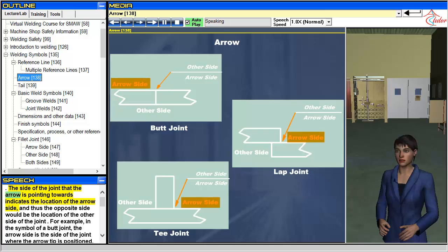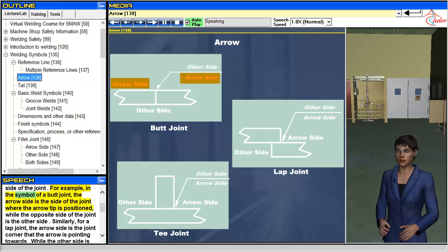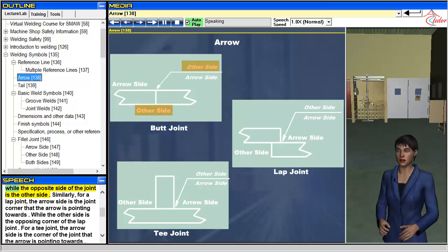The side of the joint that the arrow is pointing towards indicates the location of the arrow side, and thus the opposite side would be the location of the other side of the joint. For example, in the symbol of a butt joint, the arrow side is the side of the joint where the arrow tip is positioned, while the opposite side of the joint is the other side.